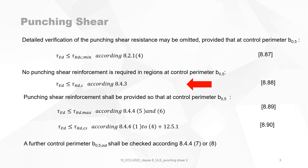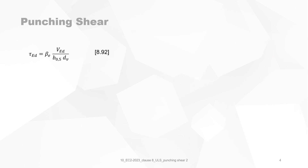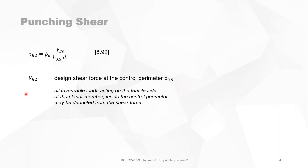In video 2 we will consider the case where the applied shear stress is smaller than the shear stress capacity of the concrete alone. The design value of the applied shear stress is equal to a coefficient beta times the shear force, divided by the control perimeter and divided by the shear resistance effective depth. VED is the design shear force at the control perimeter. All favorable loads acting on the tensile side of the planar member inside that control perimeter may be deducted from the shear force.